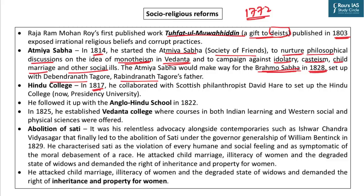In 1817, Raja Ramohan Roy collaborated with Scottish philanthropist David Hare to set up Hindu College, which is now called Presidency University. This was followed by the Anglo-Indian school in 1822. These facts are very important for your preliminary stage. In 1825, he established Vedanta College — a novel concept where both Indian learning and Western social and political sciences were offered.